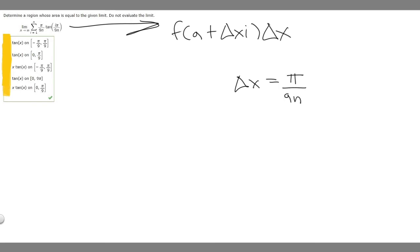We calculate delta x by doing b minus a over n. So this is going to equal pi over 9n. And so what's b and what's a? b and a are just the lowest number in our domain and the highest.